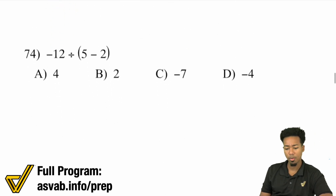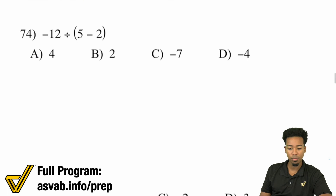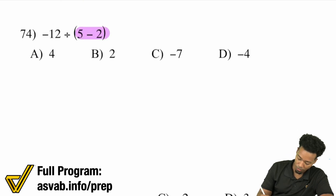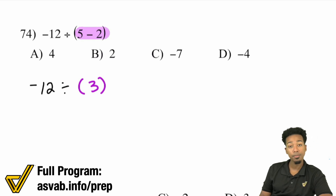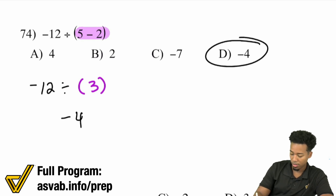Number 74: we have negative 12 divided by (5 minus 2). Taking care of that group first — 5 minus 2 is going to end up being 3. And so we have negative 12 divided by 3, which gives you negative 4. And that's D.